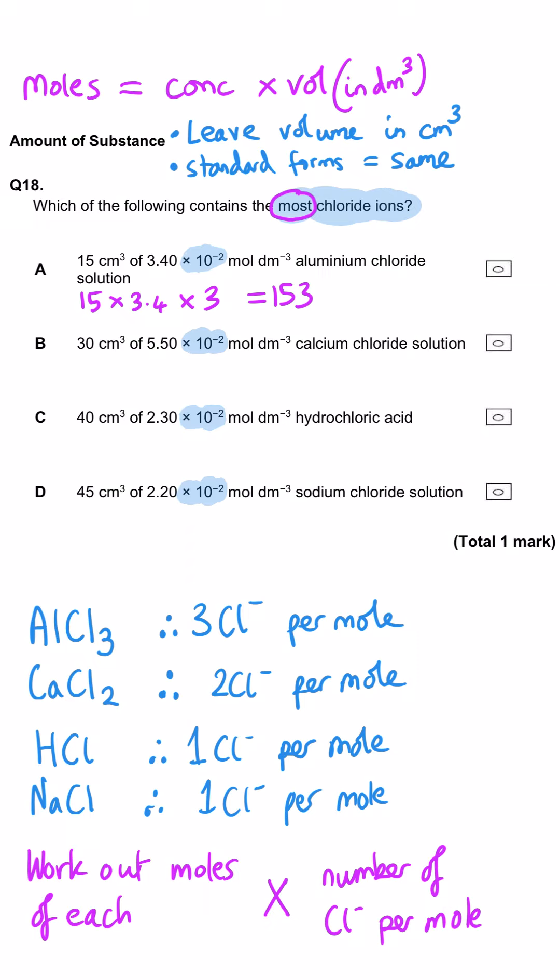For the next one, 30 times 5.5 times 2 gives us 330. So A is definitely wrong because it's a smaller number. C, 40 times 2.3 times 1 is 92, definitely wrong. D, 45 times 2.2 times 1 is 99, again wrong. B has to be the correct answer because it's the biggest value.